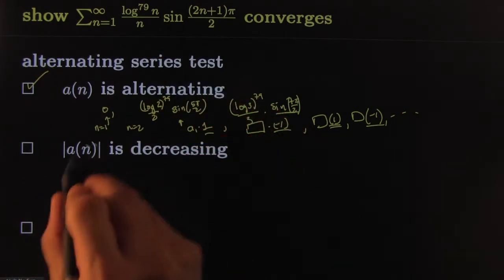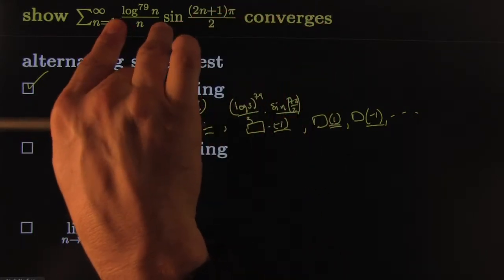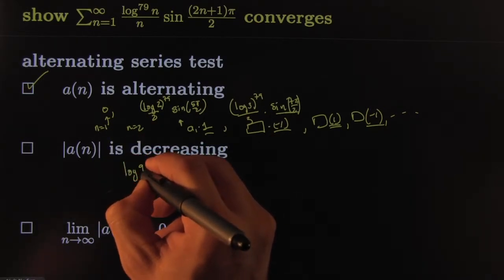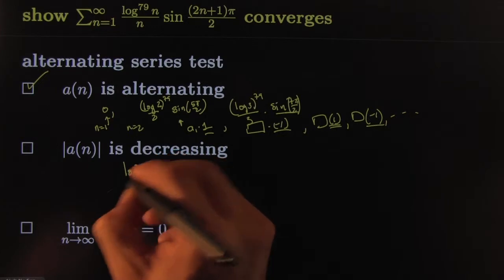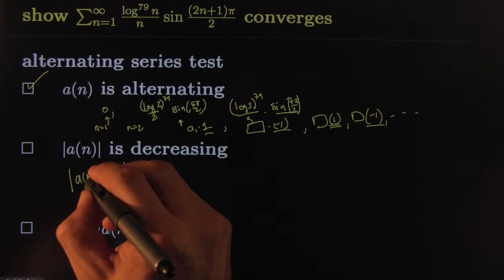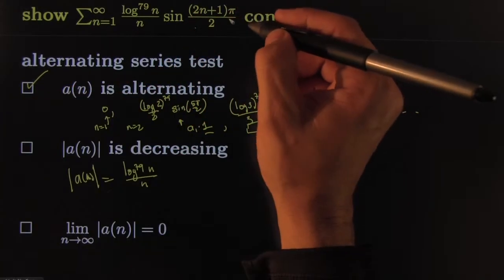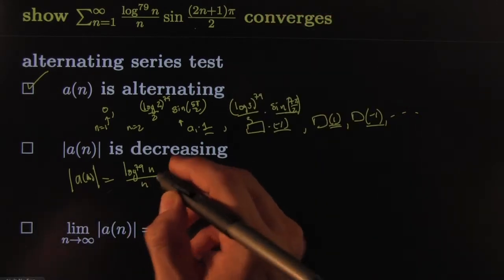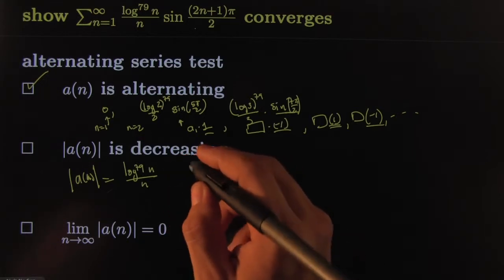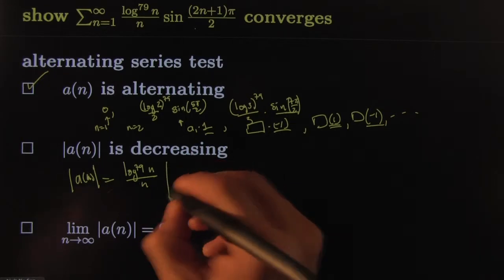Next thing you do is you forget about all this alternating nonsense and just focus on the magnitude of the number, just the absolute value, and see if that guy is decreasing. Log 79 of n, all over n, that's the absolute value. The absolute value of a_n would be the a_n without the alternating sign stuff. That's the part you take away. And so this one, is it decreasing or not? Well, you'd have to check it, but here's one way we could check it. Let's do a little derivative.